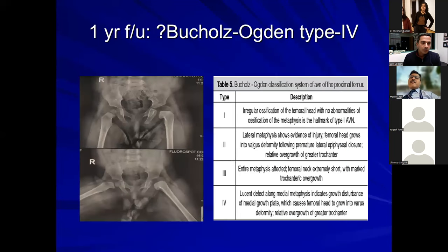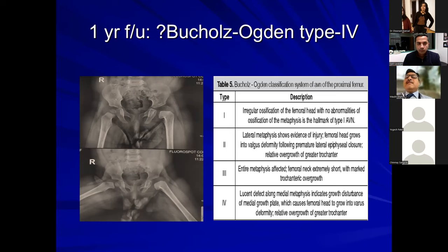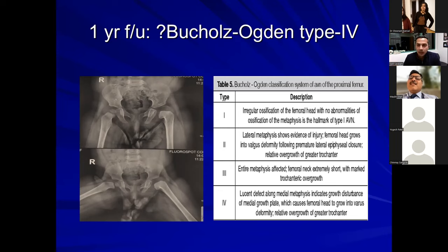At one-year follow-up with continued abduction bracing, the left side shows possible AVN — Bucholz-Ogden Type IV with coxa magna and relative epiphyseal overgrowth. This is an unusual type of avascular change at this point. I wouldn't intervene now — you want to let the hip declare itself, see how it grows, how the acetabulum evolves. You're classifying it correctly as Grade IV, but I would not intervene at this stage.